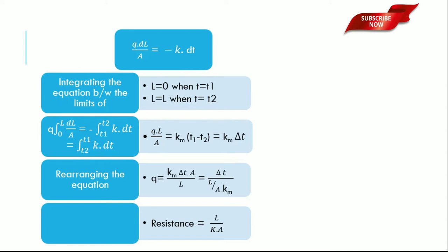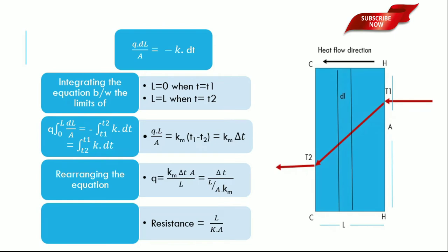Integrating the equation between the limits, when L equals zero, temperature T equals T1. When L equals L, temperature T equals T2. After integration, we get the equation Q times L divided by A equals K times temperature T1 minus T2. T1 minus T2 is delta T. While rearranging this equation, Q equals K times delta T times A divided by L.